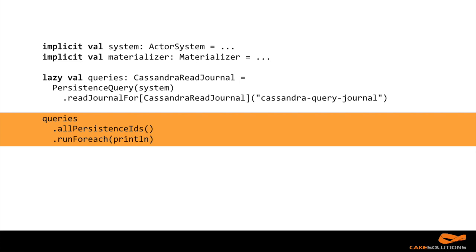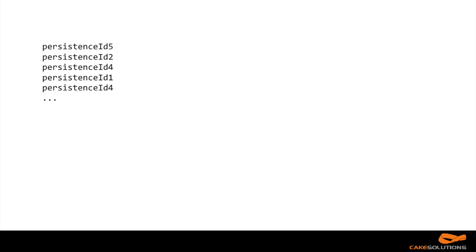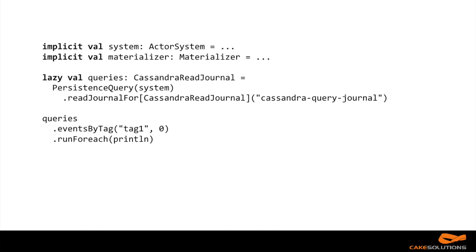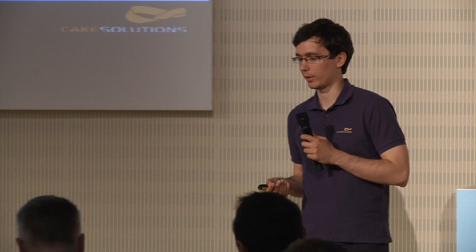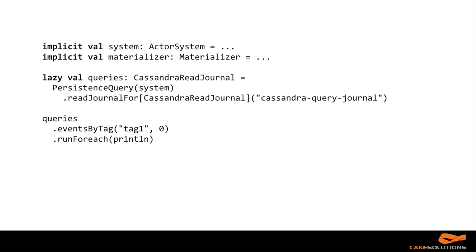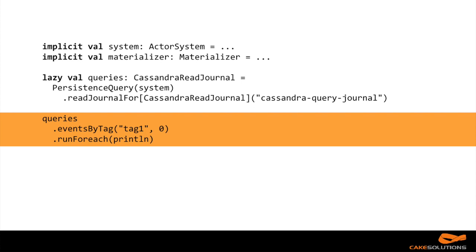Another stream is called allPersistenceIds. It gives us a stream of names of all actors in the system — if a new actor is created, it will be emitted into the stream. The last one is eventsByTag. I previously talked about the Tagged case class where you assign a tag to each event. When we subscribe to a tag, we see all messages with that tag assigned. That's very useful for aggregations, because events for multiple actors are not related in any way, but by assigning a tag we link them together and can do aggregations across multiple actors.